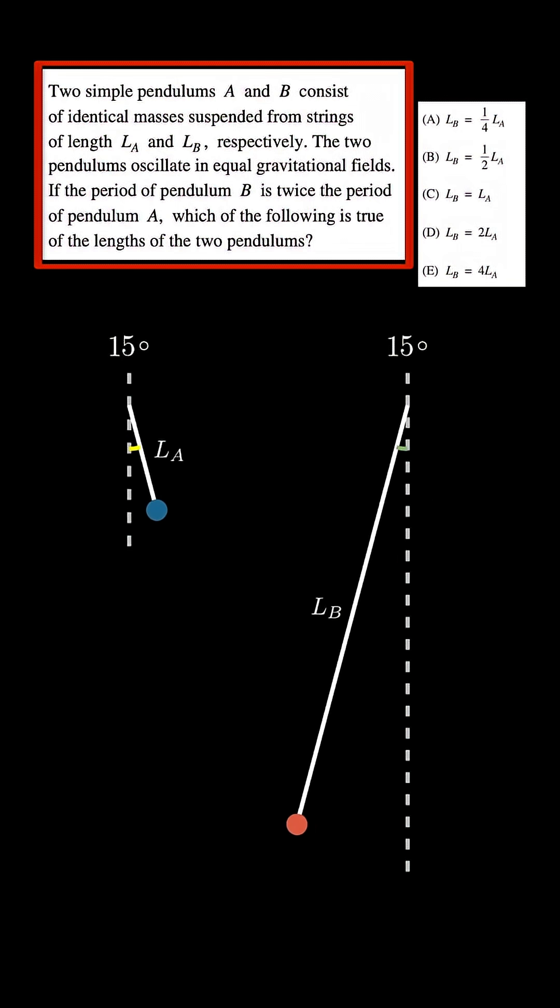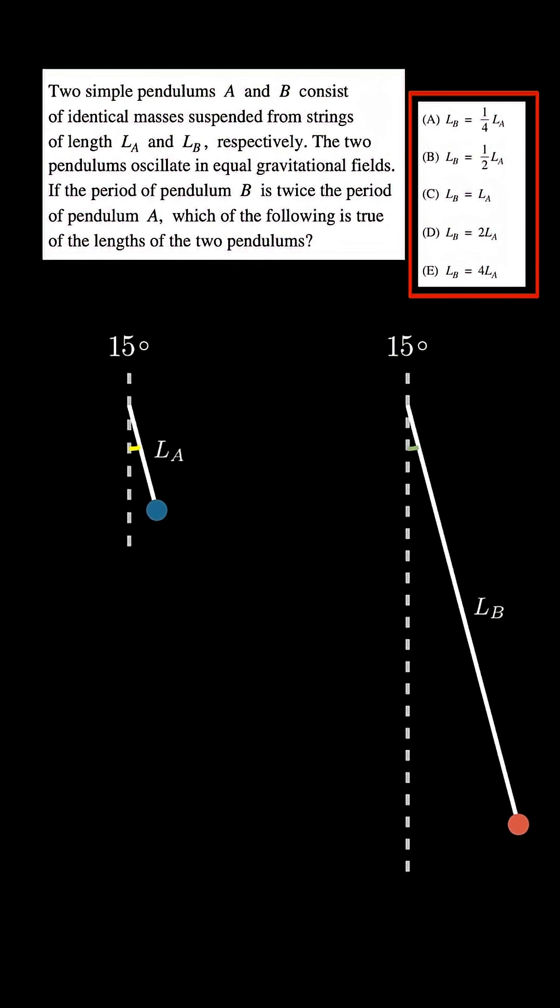In this question, two simple pendulums A and B carry identical masses suspended from their lengths LA and LB. However, the period of B is twice that of A. With that given, which of the following options is the correct answer?